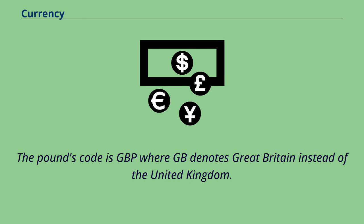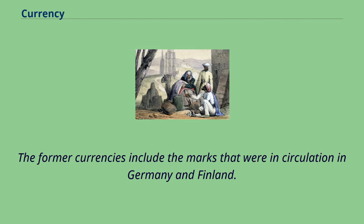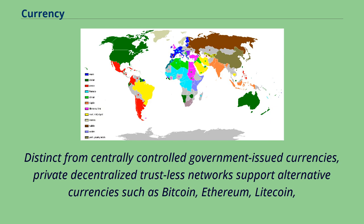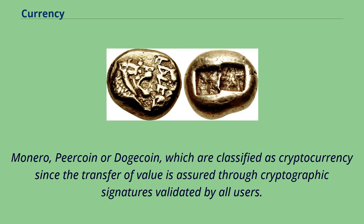The former currencies include the marks that were in circulation in Germany and Finland. The International Monetary Fund uses a different system when referring to national currencies. Distinct from centrally controlled government-issued currencies, private decentralized trustless networks support alternative currencies such as Bitcoin, Ethereum, Litecoin, Monero, Purecoin, or Dogecoin, which are classified as cryptocurrency since the transfer of value is assured through cryptographic signatures validated by all users.